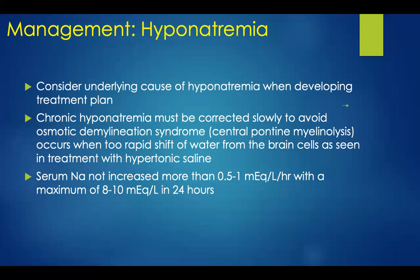In managing hyponatremia, always consider underlying causes, excluding those diagnosed with SIADH. In patients with chronic hyponatremia, correction must be accomplished very slowly to avoid osmotic demyelination syndrome, also known as central pontine myelinolysis. This occurs when there is too rapid a shift of water from brain cells, as seen with hypertonic saline treatment. The serum sodium should not be increased more than 0.5 to 1 milliequivalent per liter per hour, with a maximum of 8 to 10 milliequivalents per liter in a total of 24 hours.